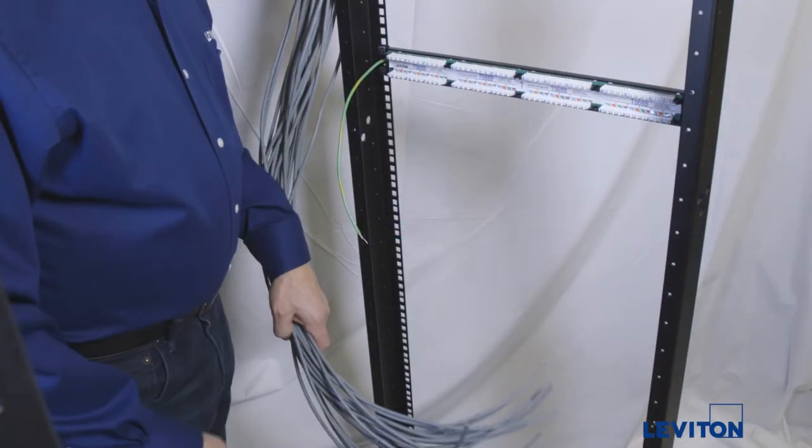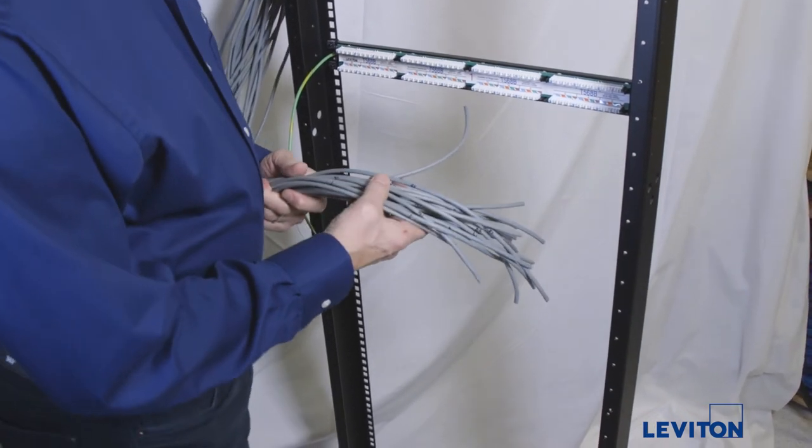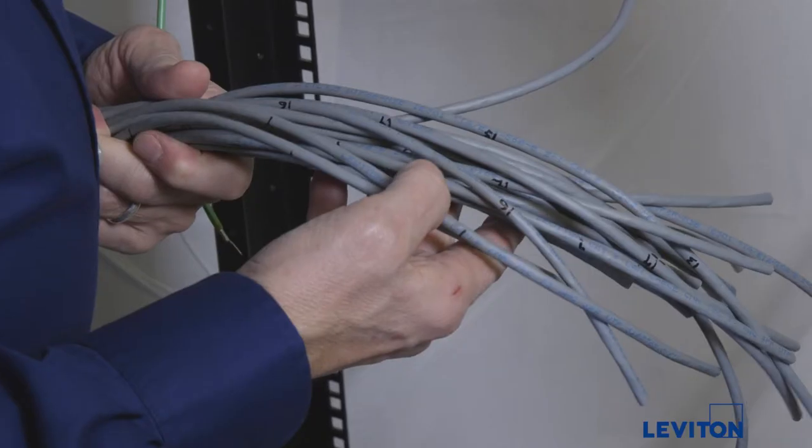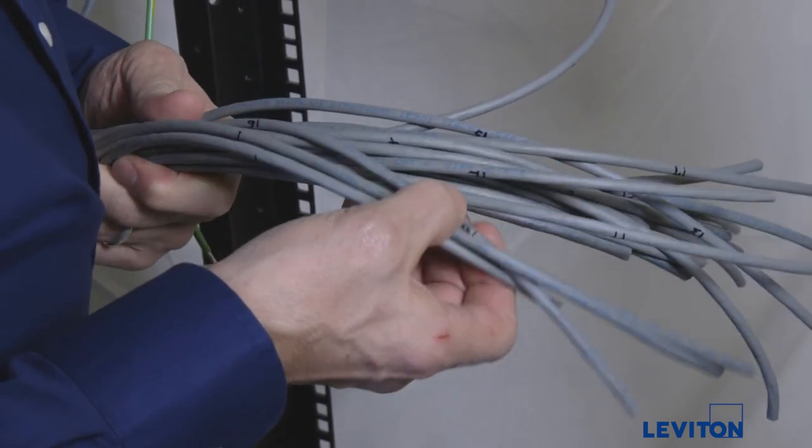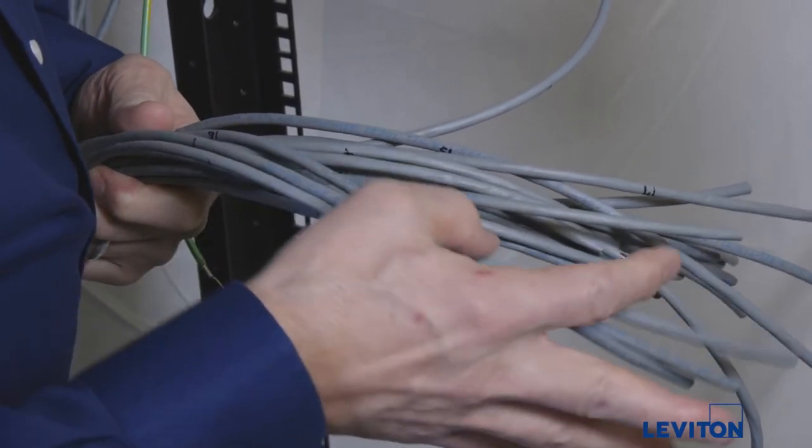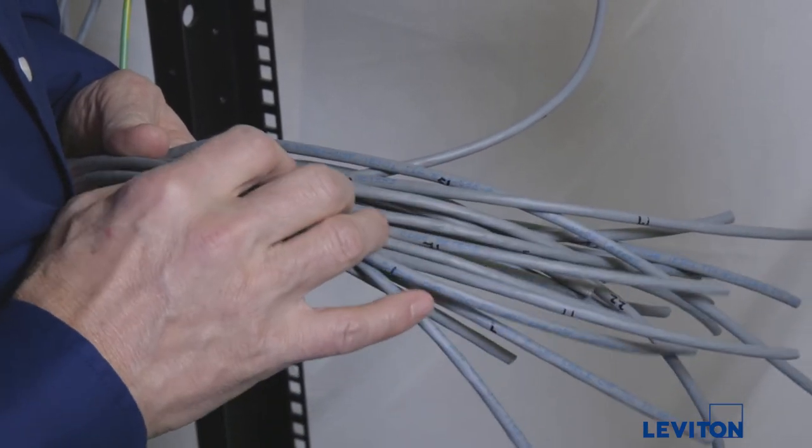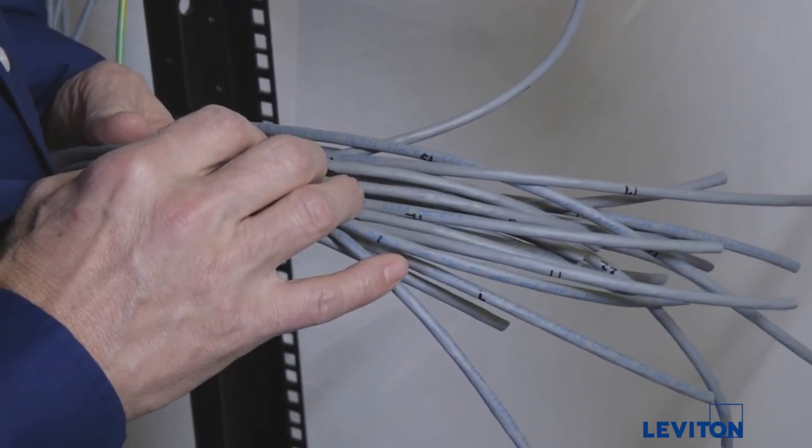For this termination we'll use a bundle of generic Category 6 cables. When selecting cable be sure to follow your local cabling regulations and requirements. Each cable has been numbered along its length. This will make it easy to identify which cable goes to which port.